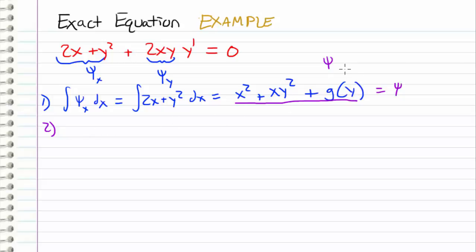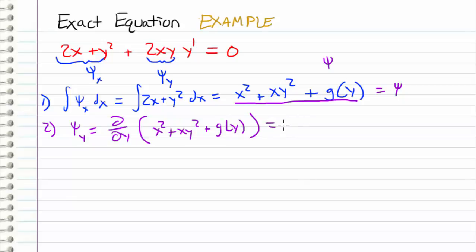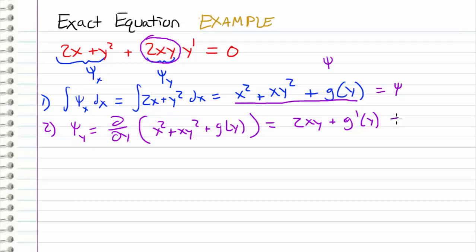The next thing I'm going to do is take our result — x squared plus xy squared plus g(y), which represents psi — and differentiate it with respect to y. When I do that, psi sub y equals the partial derivative of x squared plus xy squared plus g(y) with respect to y. This comes out to 2xy plus g prime of y, since x squared goes away. We already have an expression for psi sub y from our differential equation, so we can set this expression equal to our function N(x,y), which is also psi sub y.